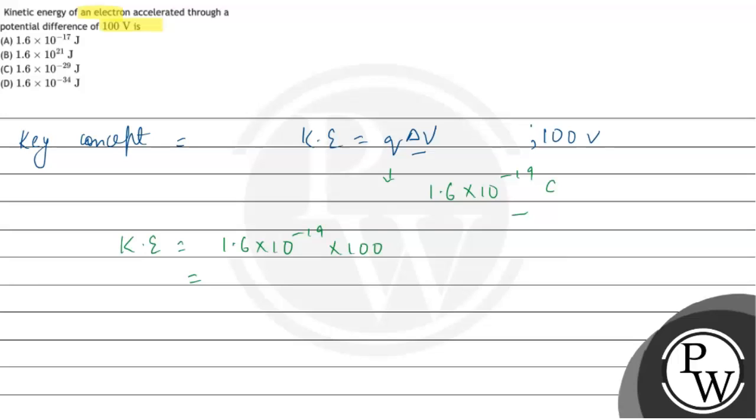If we solve this, then it will be 1.6 into 10 to the power minus 17 joule.